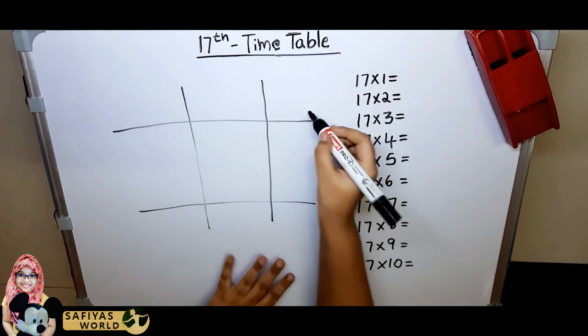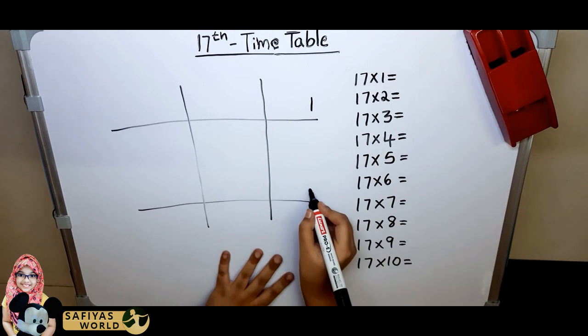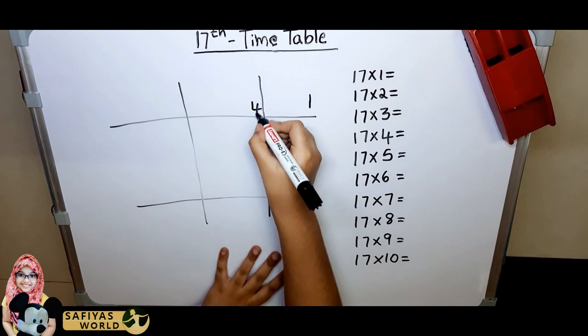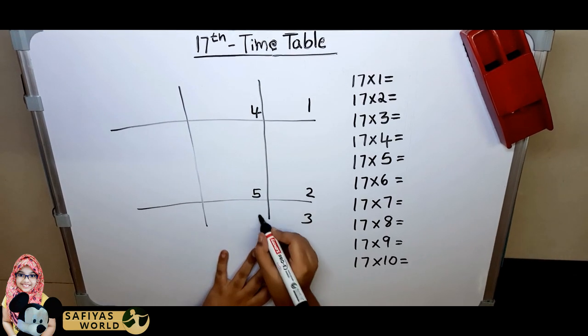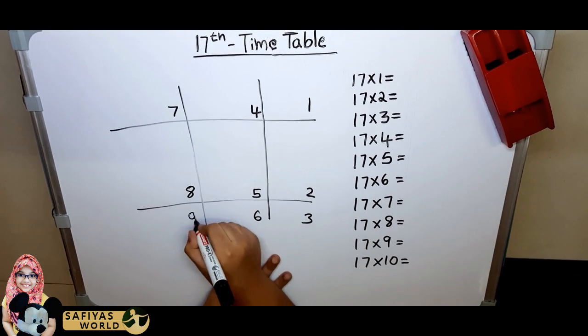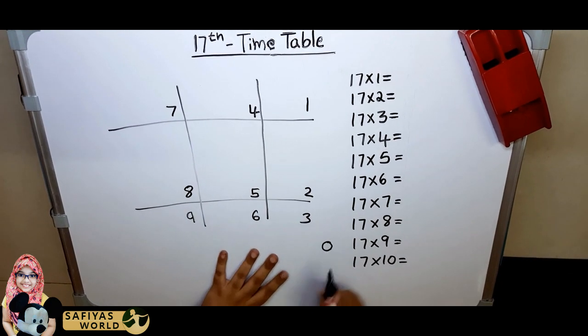Now start with here: 1, 2, 3, 4, 5, 6, 7, 8, 9, and put here 0. First row we have to write odd numbers.